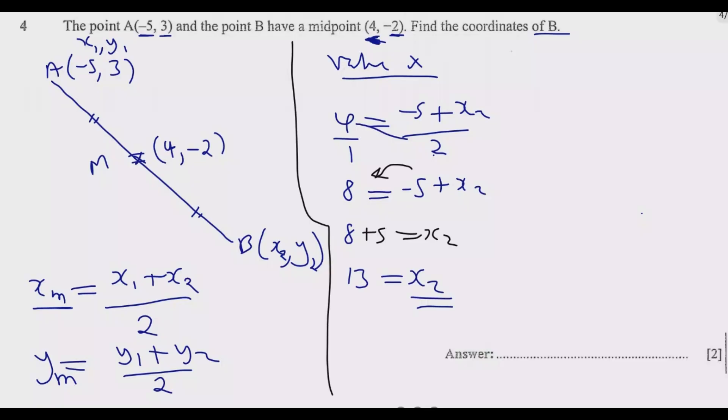Then next we'll find the value of Y. We have M is negative 2. So negative 2 is equal to Y₁ is 3, so it will be 3 plus Y₂ which we don't know, we're looking for here, over 2.